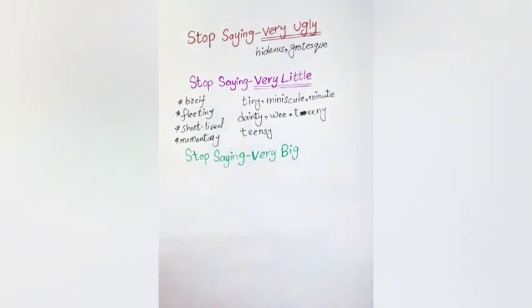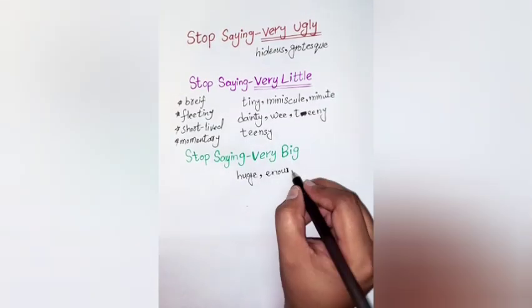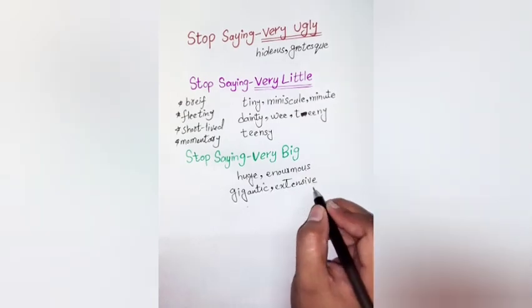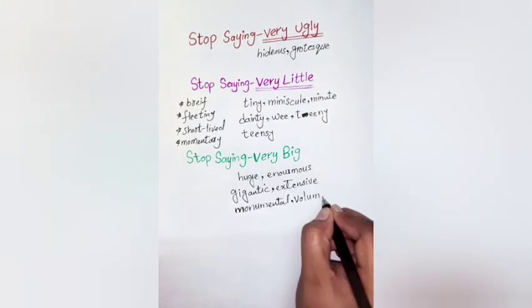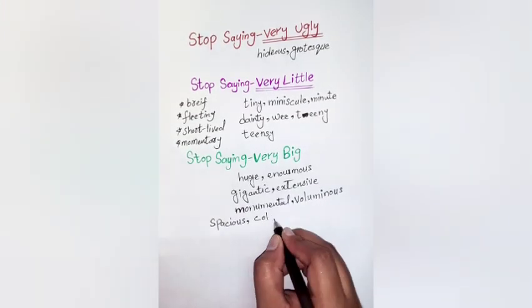Stop saying 'very big.' Just like little, big can be a bit dull as an adjective. If you want to expand your vocabulary, instead of saying 'very big' you could say: huge, enormous, gigantic, extensive, monumental, voluminous, spacious, colossal, or considerable.